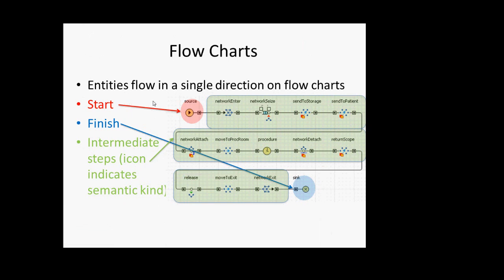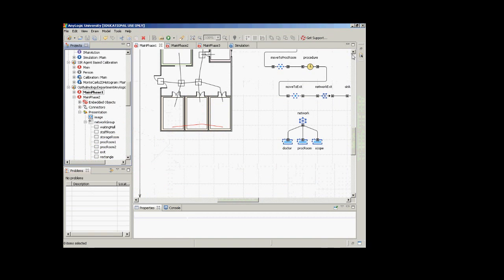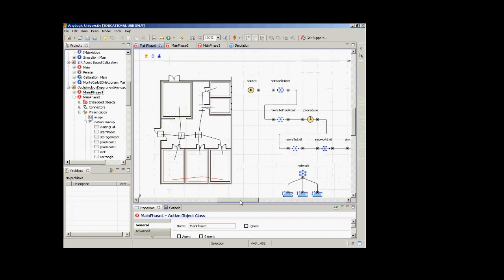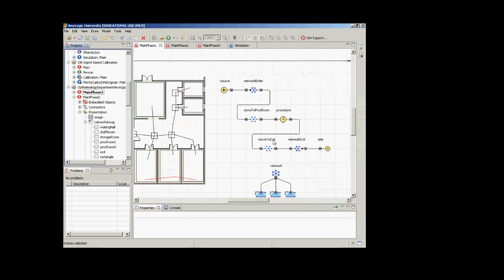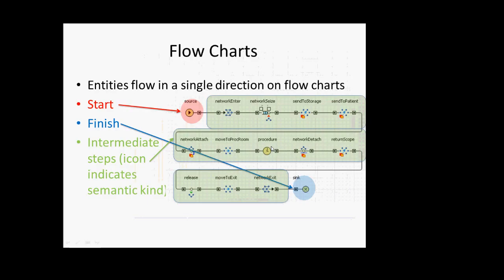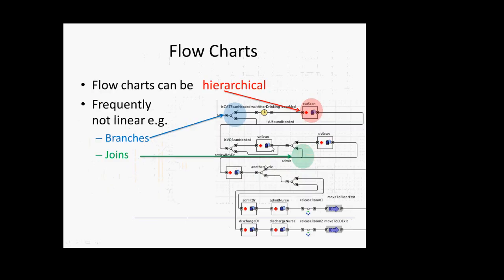We're going to have flow charts. If you click on main phase one, you're seeing a small flow chart. We'll go through this in detail later. You'll notice there's a source, a sink, and then some intermediate steps. There are patterns associated with them — for example, 'move to proc' and 'move to exit' share the same pattern, which indicates their semantics as a network move-to operator. Flow charts can be more complex than this — the one here is linear, but they can be non-linear. You can have branches, joins, loops, et cetera.